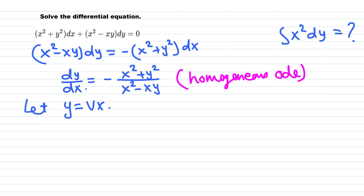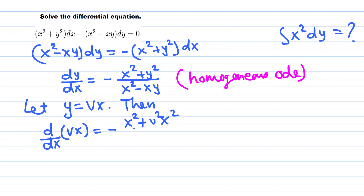Let y equal vx. We are converting the whole differential equation in terms of new variable v and x. We replace y throughout by vx. Then dy over dx is the derivative of y, where y is vx. Since v is a function of x, this is a product, so we must use the product rule.